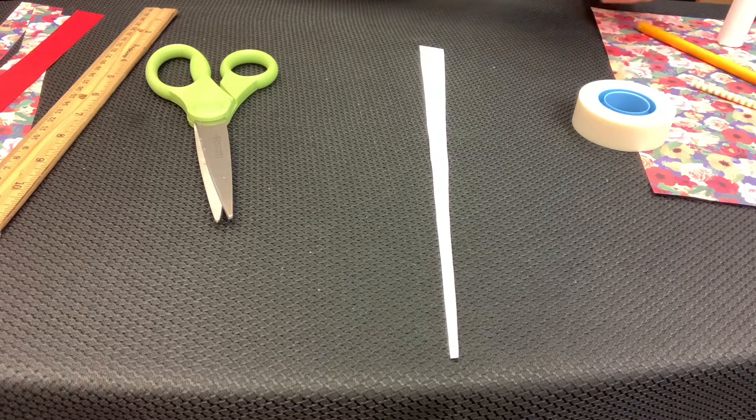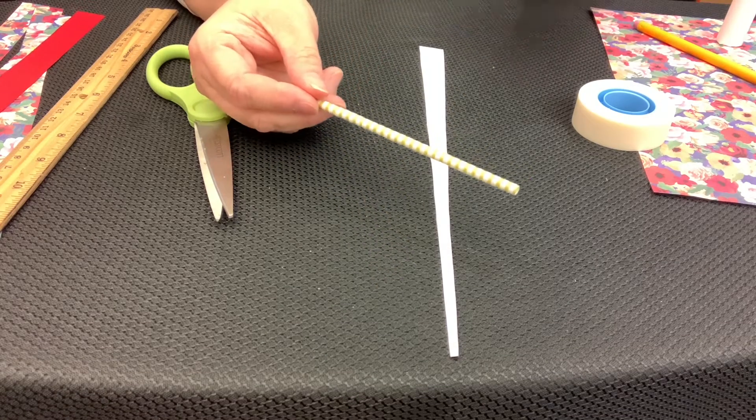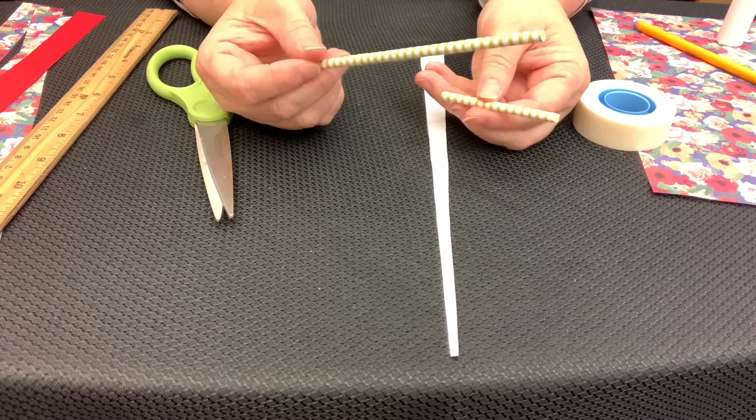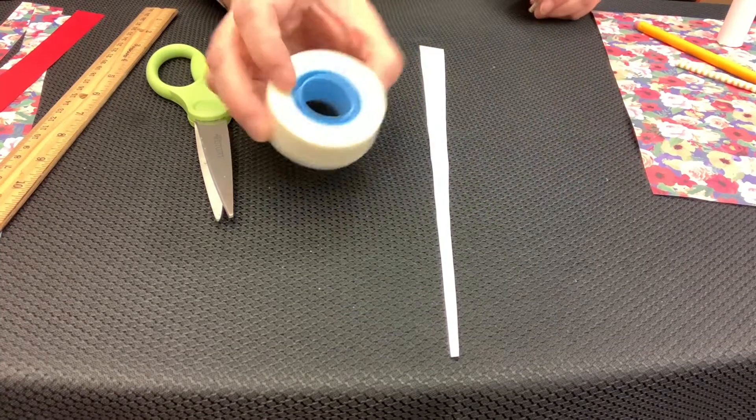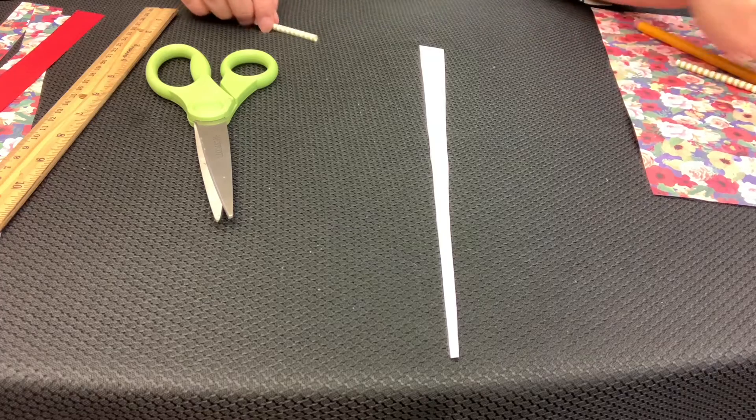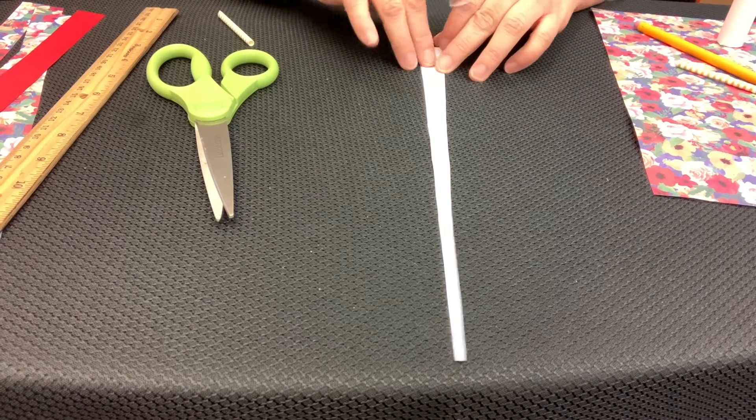Now we're going to roll our strip into the bead. With the cocktail straws, I like to cut them in half and only use half of the straw, but you can use the full straw. You're going to need some tape. You cut a little tape.